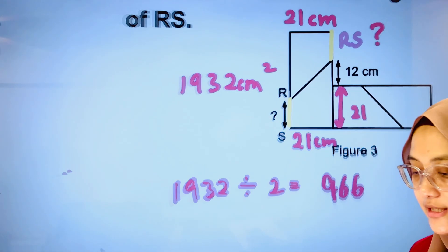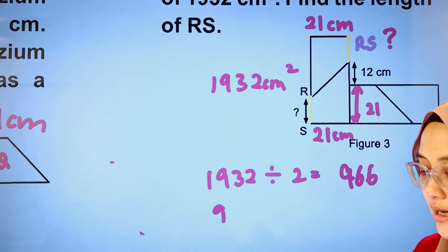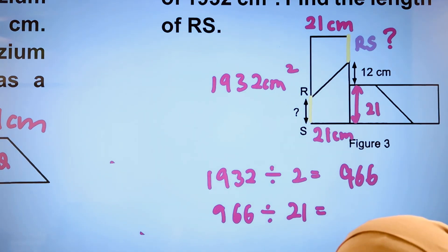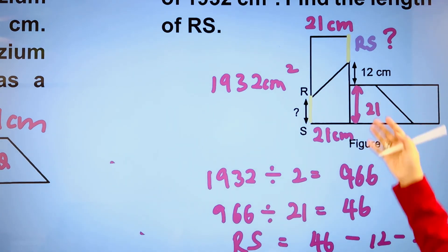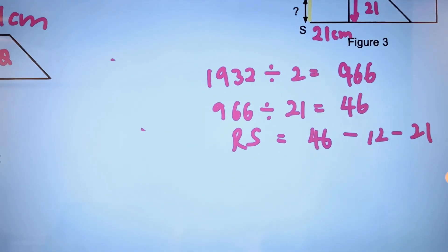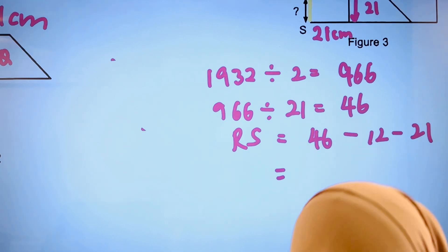So let's do that together. Area divided by breadth, we get the length, which is 46 cm, and therefore RS is equal to 46 minus 12 minus 21. And that gives us 13 cm.